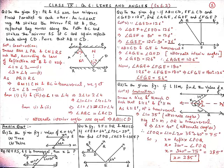Now, in this type of question, if we prove that angle ABC is equal to angle BCD, then we can say that ray AB is parallel to ray CD. First we have to do construction — draw BM which is perpendicular to PQ, and similarly draw CN which is perpendicular to RS.